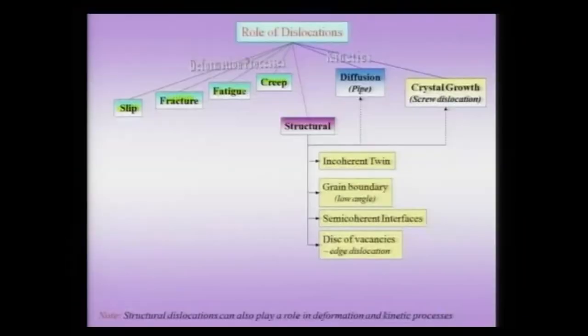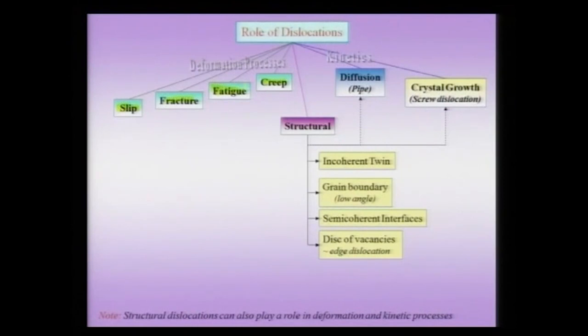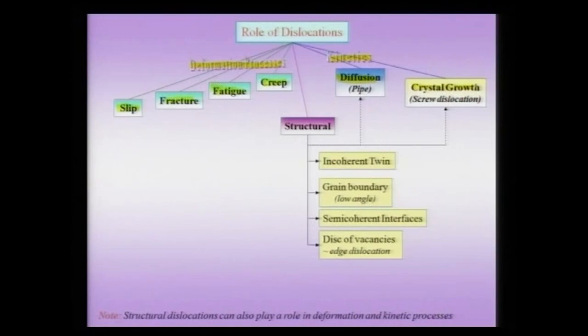Dislocations also play a very important role in the nucleation of fatigue cracks. Under oscillating stress fields, dislocations can move and come to the surface, causing surface steps which act as surface intrusions or extrusions that effectively become cracks. So the very process of dislocation motion by slip at the microscopic level can give rise to fatigue cracks. Dislocations also play a very important role in creep and related phenomena, as well as in kinetic processes like diffusion. They can also perform a constructive role in crystal growth.